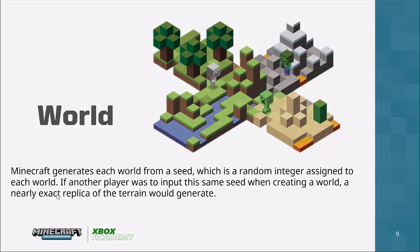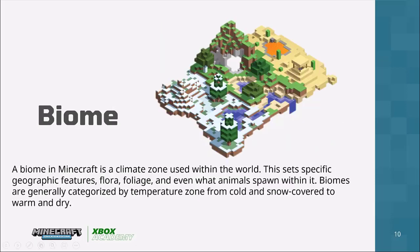Each world in Minecraft is generated from a seed, and within that world you can explore mountains, caverns, lakes and rivers. Just like the real world, Minecraft is made up of different biomes — desert biomes, snowy tundras, mountainous forests — and each biome has specific geographic features such as different flora, foliage, and even different animals that spawn within it.